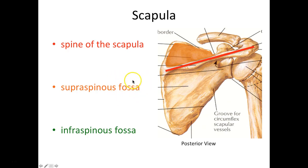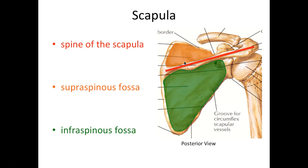Fossa means a shallow depression, and that's exactly what this is. Later in Anatomy 2 we're going to learn that the supraspinatus muscle sits within this fossa. Below the spine of the scapula, feeling for that spine again and going below it, you're going to have a shallow depression called the infraspinous fossa.